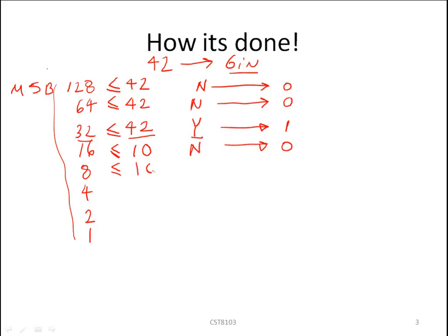Since the answer was no, we simply carry the value to the next line. Is 8 smaller than or equal to 10? The answer is yes. That position takes a bit value of 1. Therefore, we subtract 8 from 10, carry the result to the next line, giving us 2. Is 4 smaller than or equal to 2? The answer is no. Therefore, that bit position is 0.